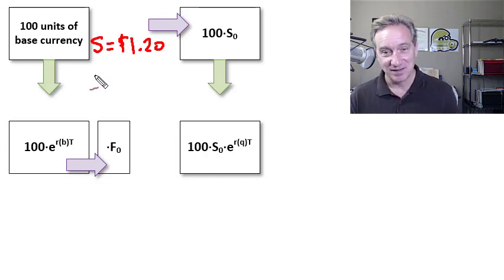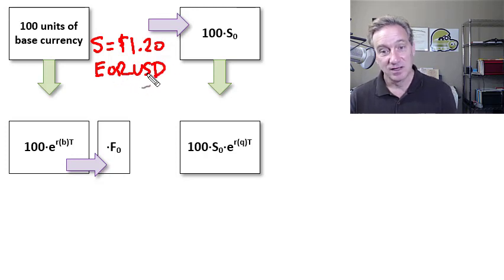And we notate that, perhaps counterintuitive to some of us, we notate that by starting with the base currency and then putting the quote currency second. So this indicates 1.12 U.S. dollars per euro. If I translate my 100 euros, exchange them for dollars, of course, I would have 120 U.S. dollars immediately.